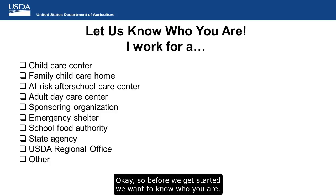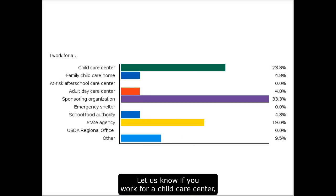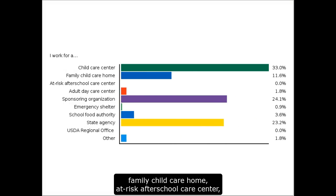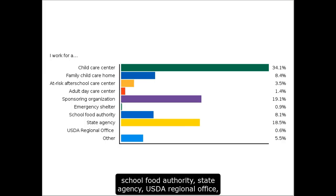Before we get started, we want to know who you are. Please go ahead and select one of the following listed on the slide. Let us know if you work for a child care center, family child care home, at-risk after-school care center, adult day care center, sponsor, emergency shelter, school food authority, state agency, USDA regional office, or other.